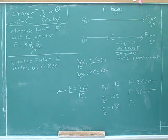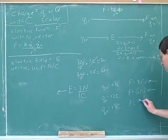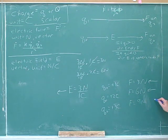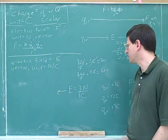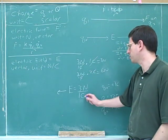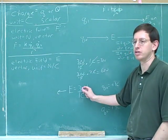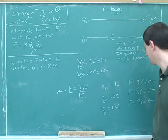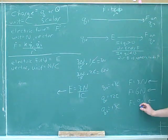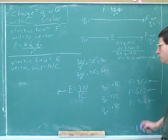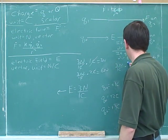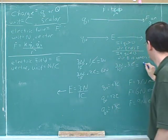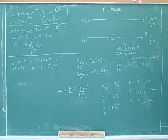What would the force be for three Coulombs? Nine newtons, to the left. We're trying to get more intuition for what this means: an electric field of three newtons per Coulomb means every time you add an extra Coulomb of test charge, you get three extra newtons of force. We've added another Coulomb, so we have another three newtons. Mathematically: three newtons per Coulomb times three Coulombs is nine newtons.